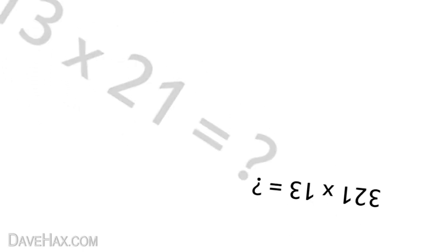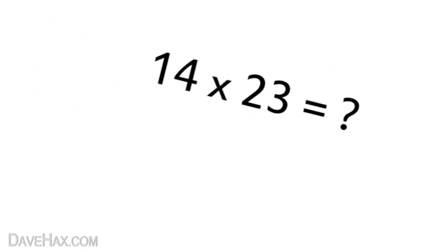Today I'm going to show you a really simple way to multiply two numbers together. This technique originates from Japan and involves substituting numbers for lines. We'll start with 13 times 21.